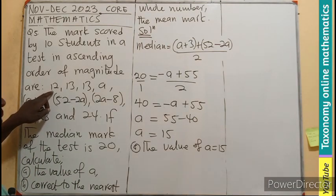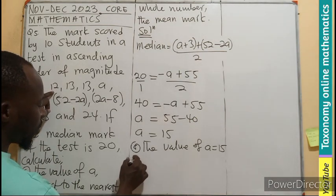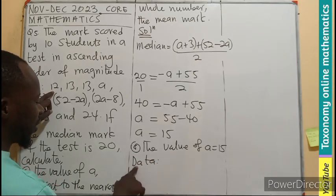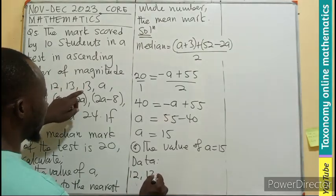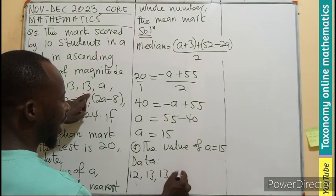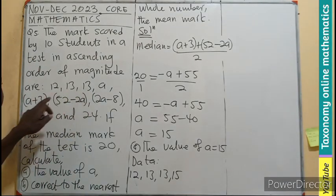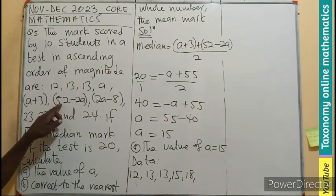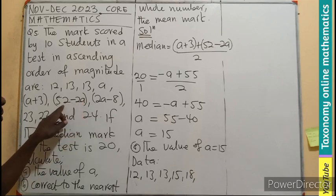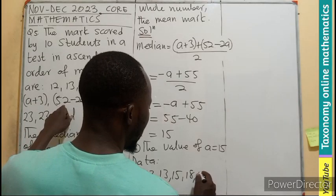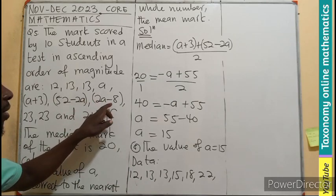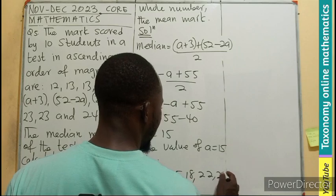So the data will now become, the first one is 12, 13, 13, 15 which is the A. This is 15 plus 3, that will be 18. Then this is going to be 2 times A, 30 minus 22, that will be 22. 2 times A, 30 minus 8, it will be 22.